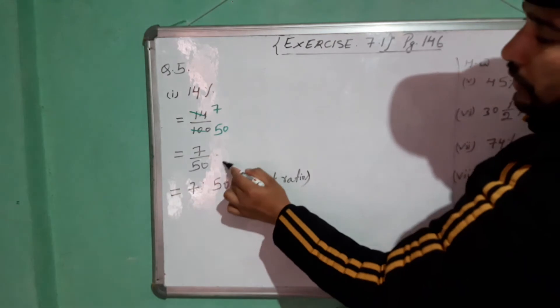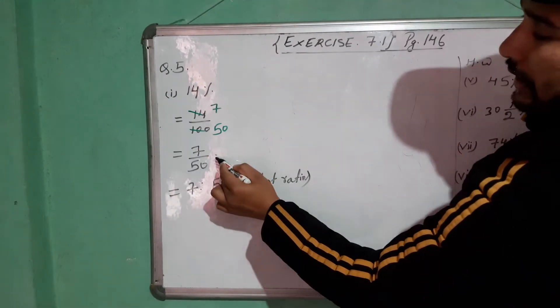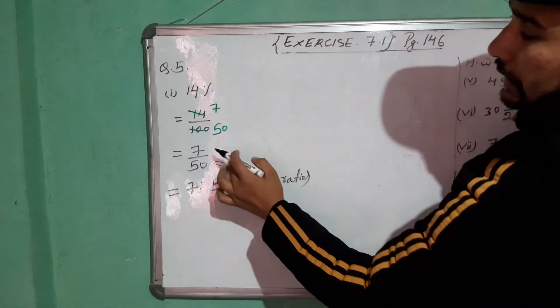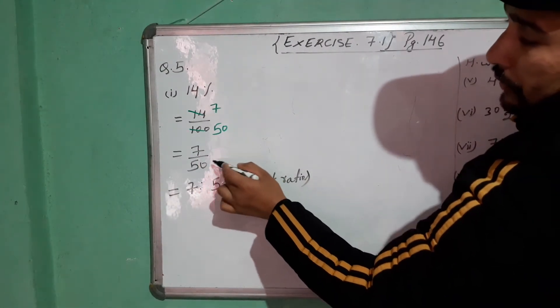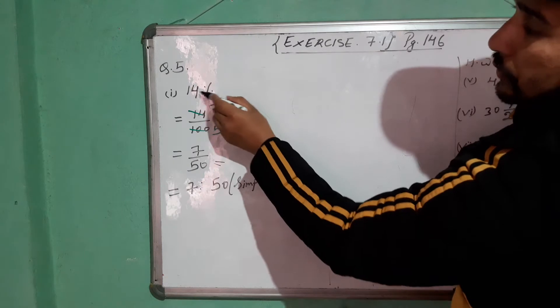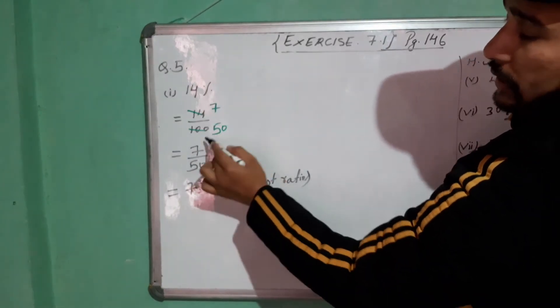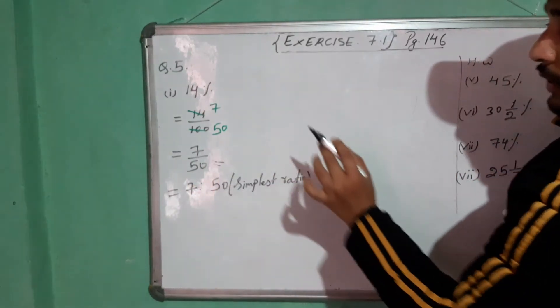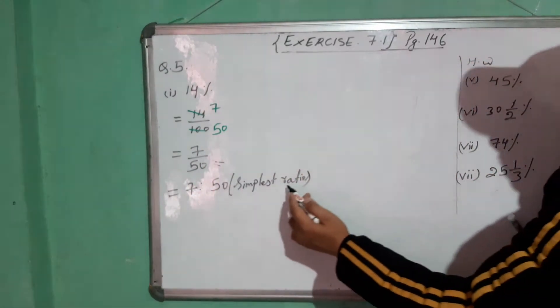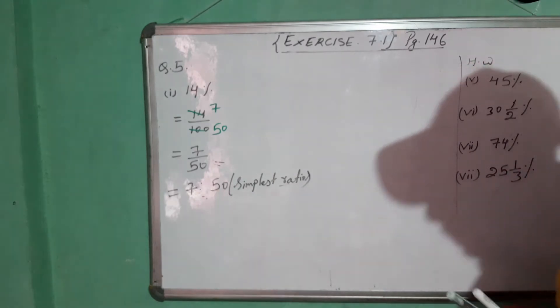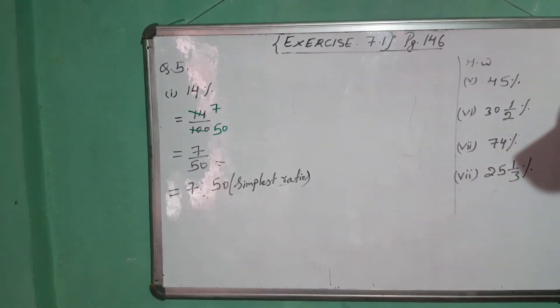Don't leave your answer at the fraction step. If you are asked to find the simplest fraction of 14%, then you go up to the fraction. But if you are asked to find the simplest ratio, then you have to write the ratio step also.